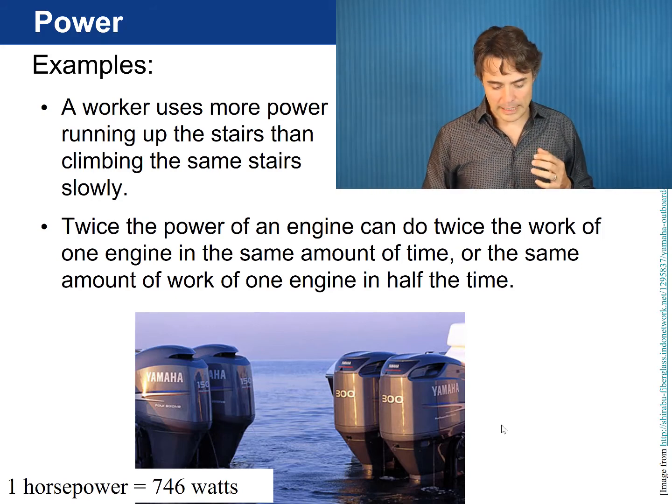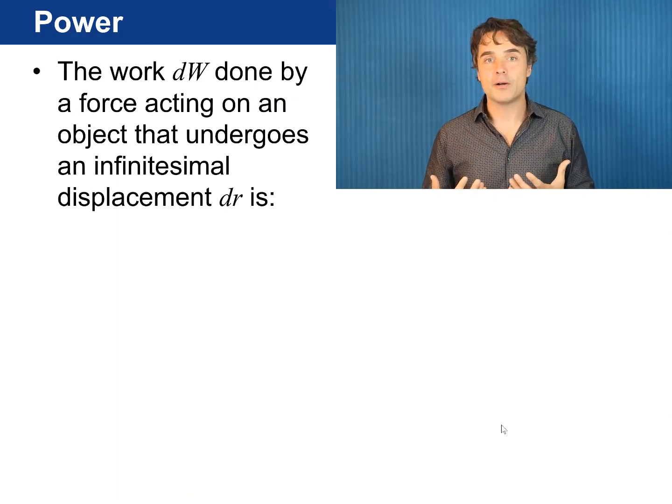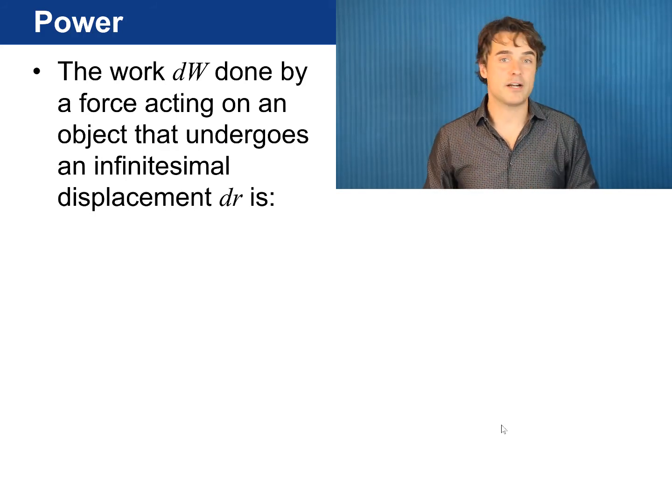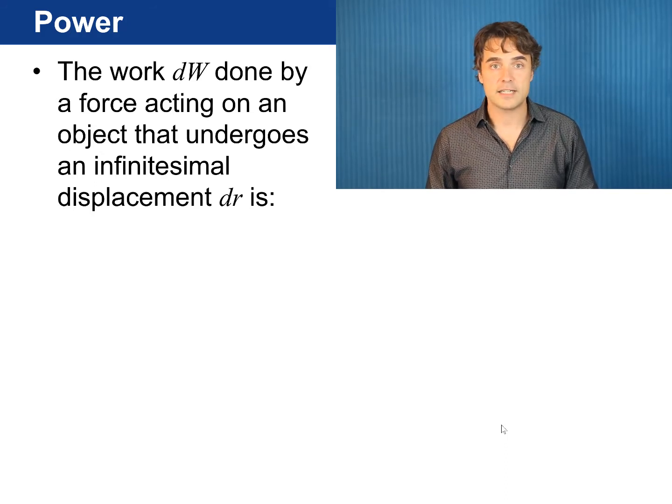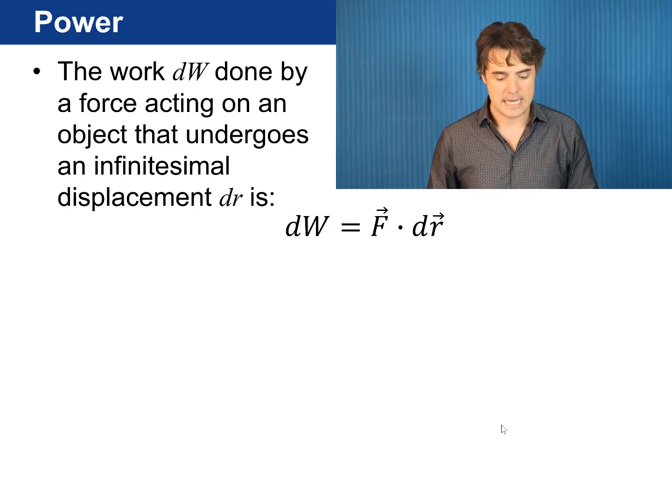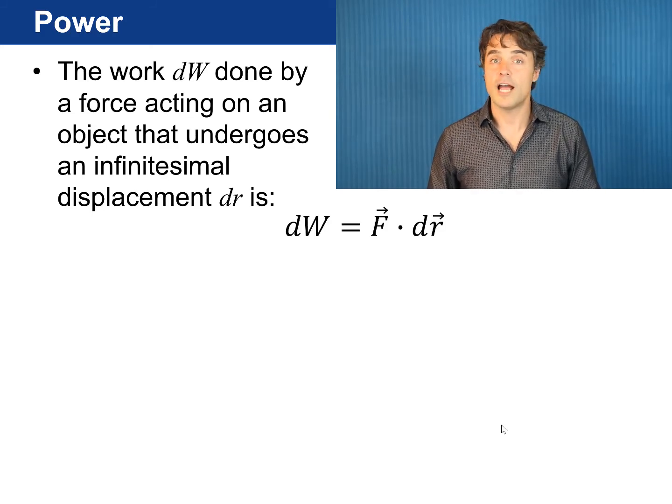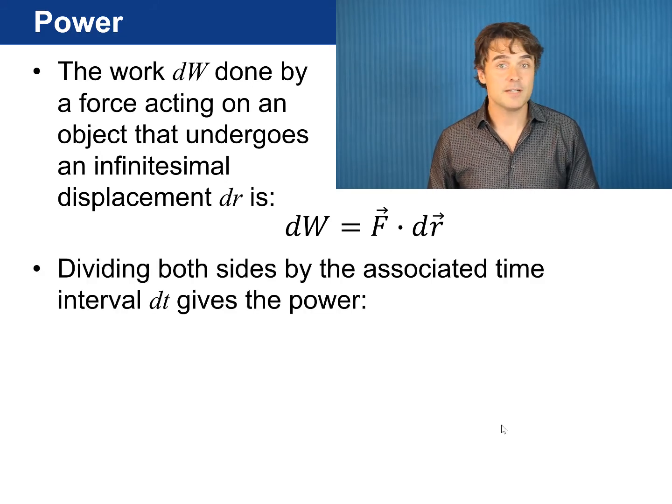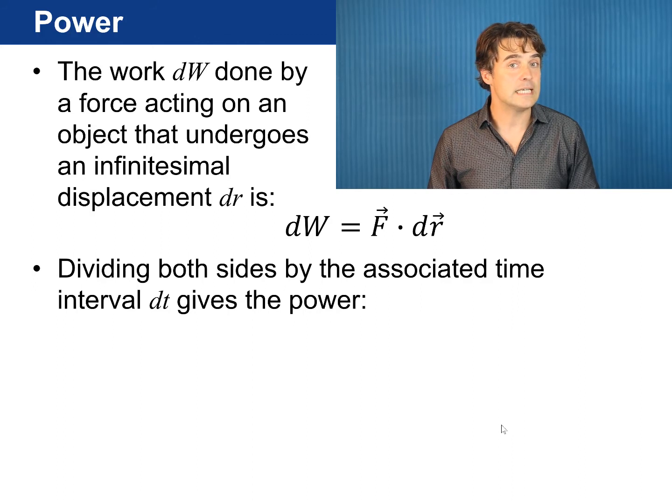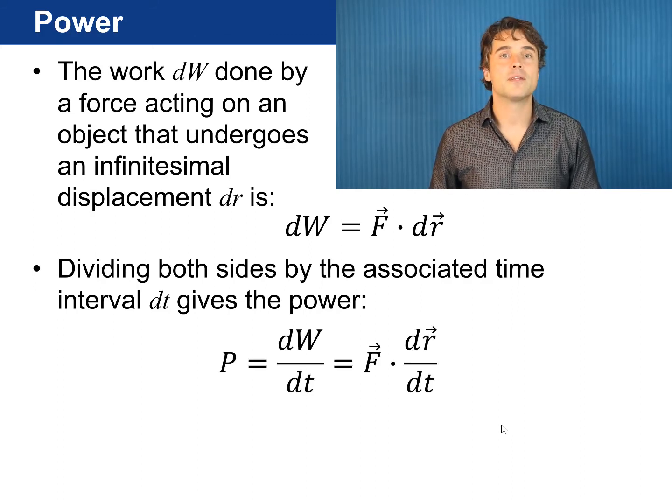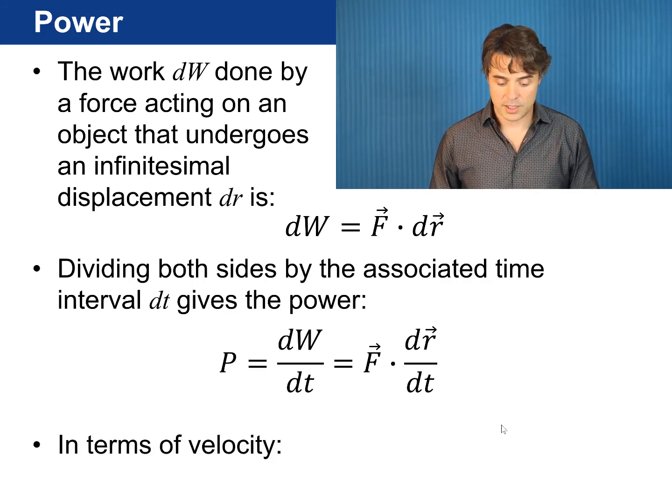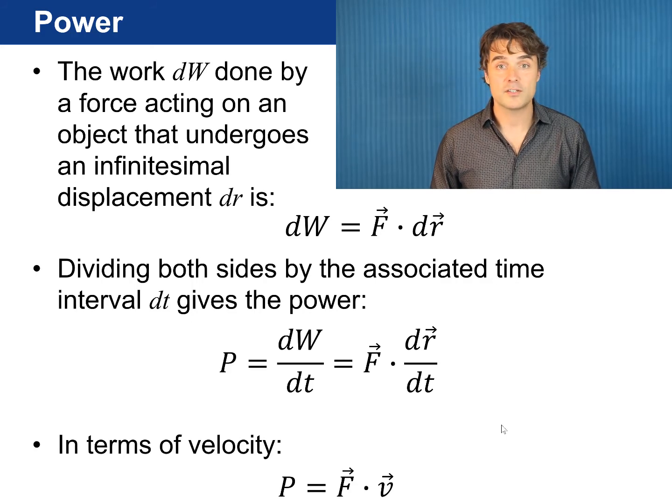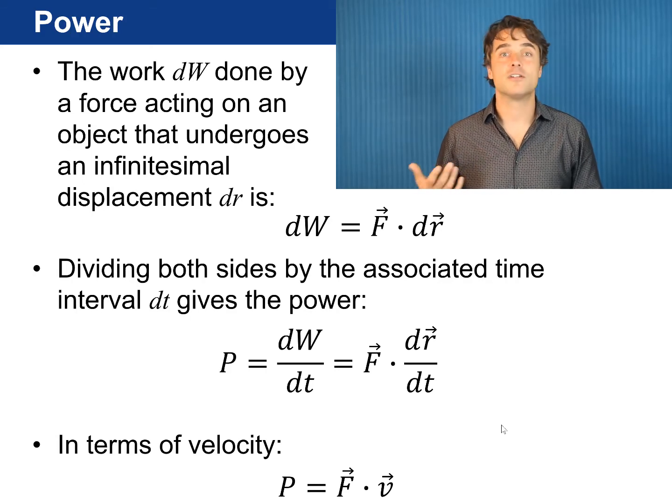This leads us to the relationship between the power used up by pushing an object and the speed of that object. The infinitesimal work, dw, done by a constant force acting on an object that undergoes an infinitesimal displacement, dr, is f dot dr, where f is the force applied to the object. If you divide both sides of this equation by the differential dt, the left side becomes the power, dw by dt. The right side becomes the constant force dot producted with dr by dt, which is the velocity. So, writing this in terms of velocity, v, power equals f dot v.